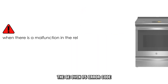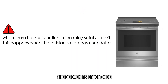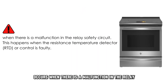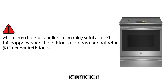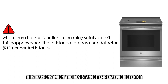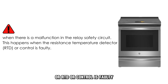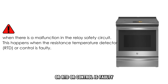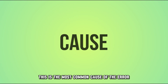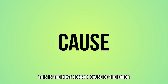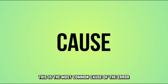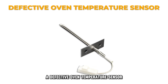The GE Oven F5 error code occurs when there is a malfunction in the relay safety circuit. This happens when the resistance temperature detector, or RTD, or control is faulty. This is the most common cause of the error — a defective oven temperature sensor.